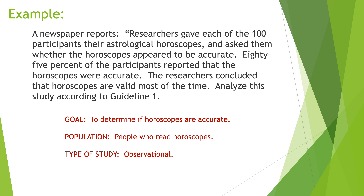The goal is to determine if horoscopes are accurate. The population is people who read horoscopes — the 100 participants are just the sample. The type of study is observational; you're looking back to see if the horoscope was accurate. Horoscopes are written in such a vague way that pretty much anything will seem accurate, so there's no real meaning behind the conclusions.